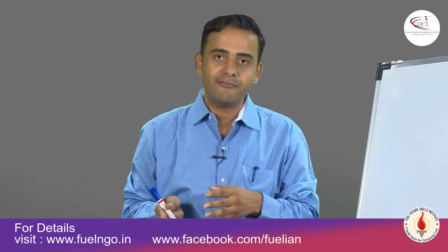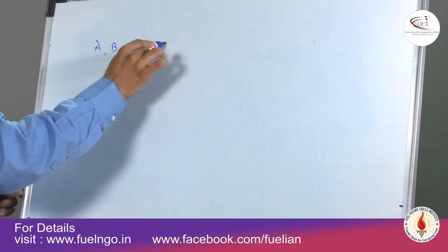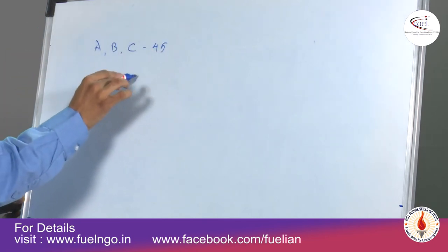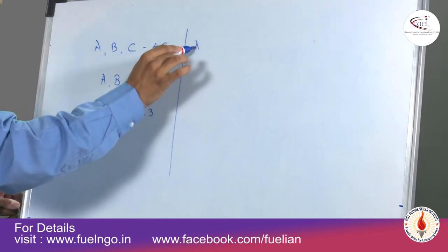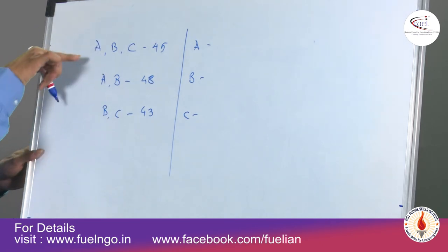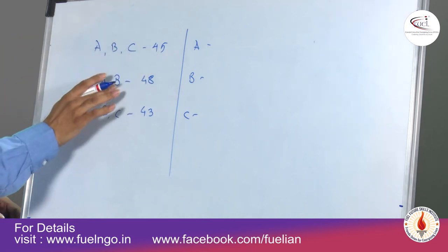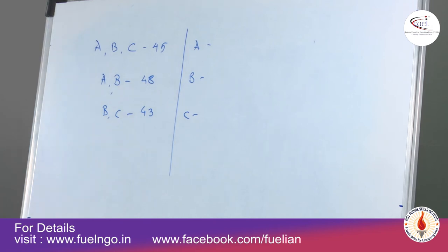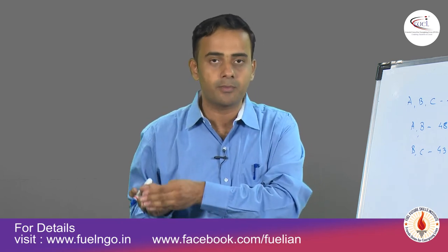If we involve average as part of arithmetic, consider this layman example: I have 3 numbers A, B, and C. The average of all three is 45. The average of A and B is 48, and the average of B and C is 43. What are the respective values of A, B, and C? We set up: (A+B+C)/3 = 45, (A+B)/2 = 48, and so on — solvable using basic knowledge of average.